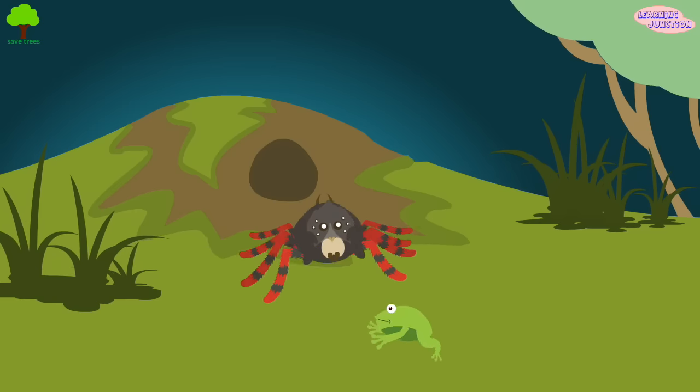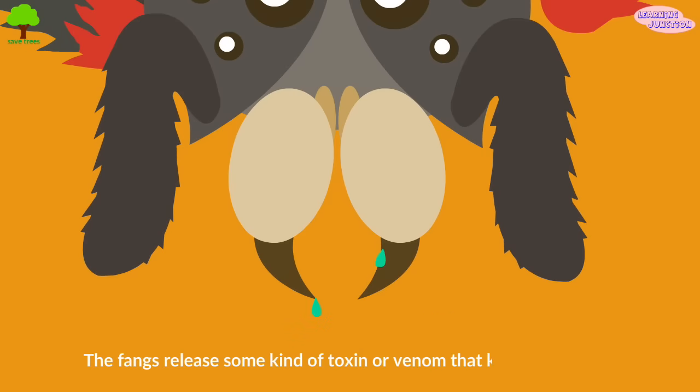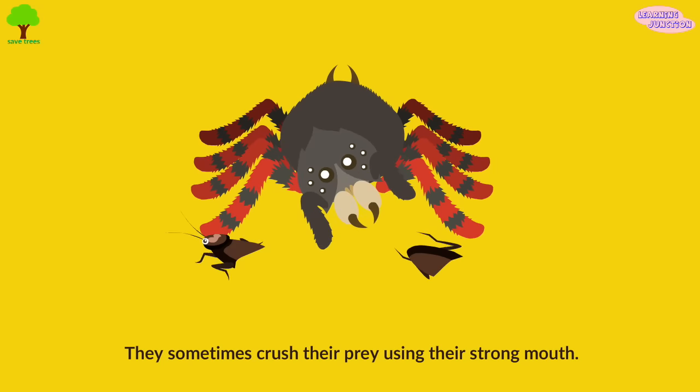They kill their prey with a bite from their fangs. The fangs release some kind of toxin or venom that kills the victim. They sometimes crush their prey using their strong mouth.